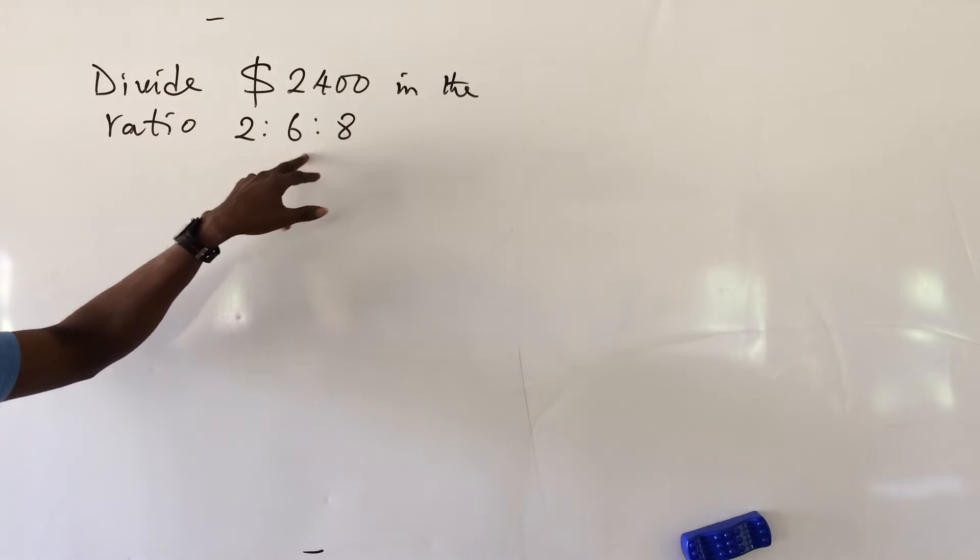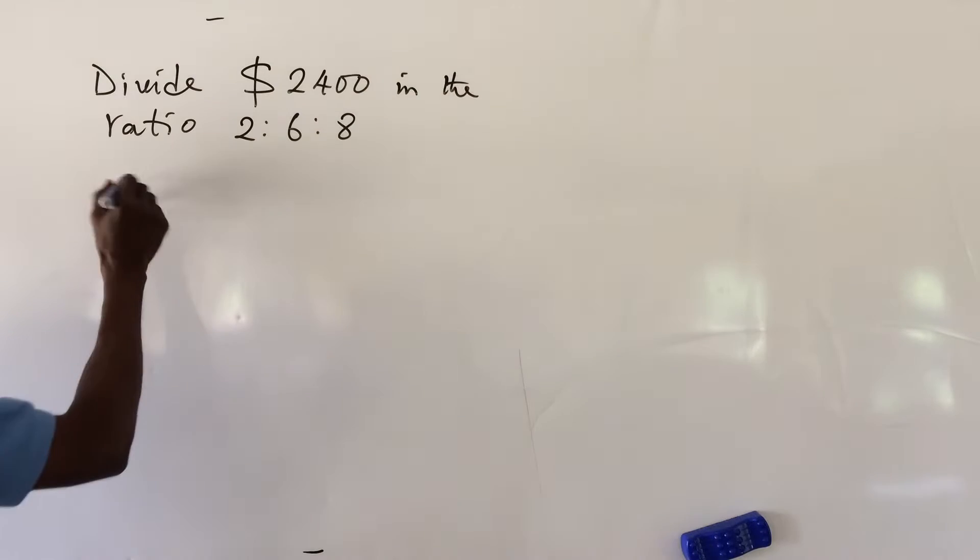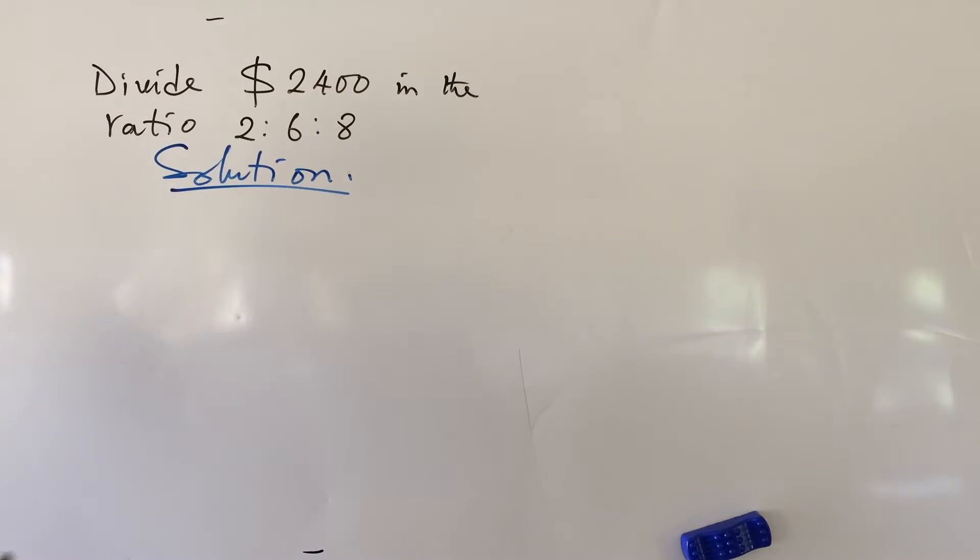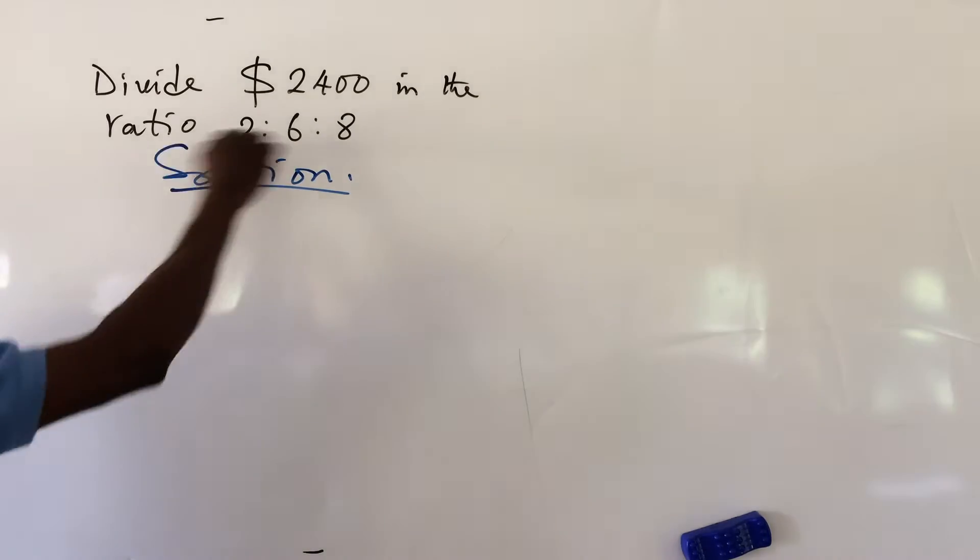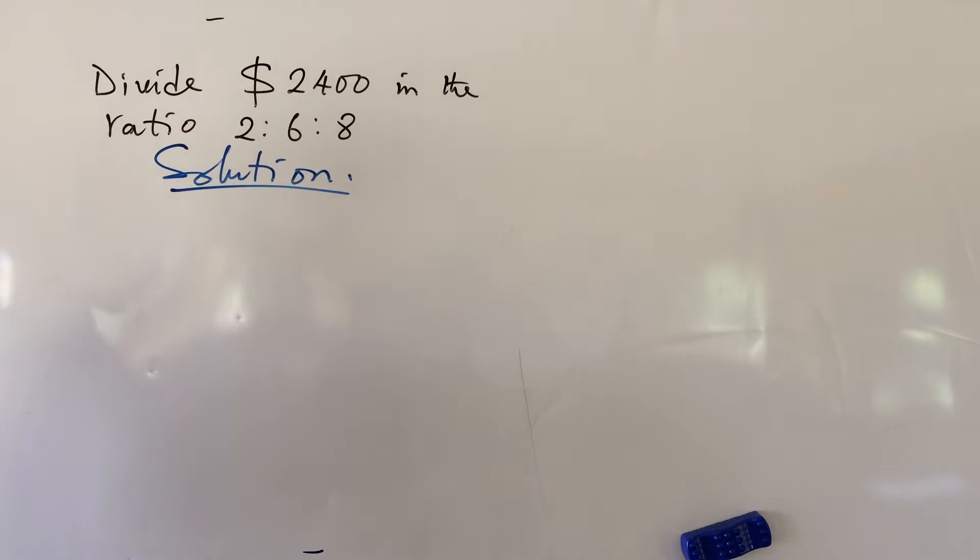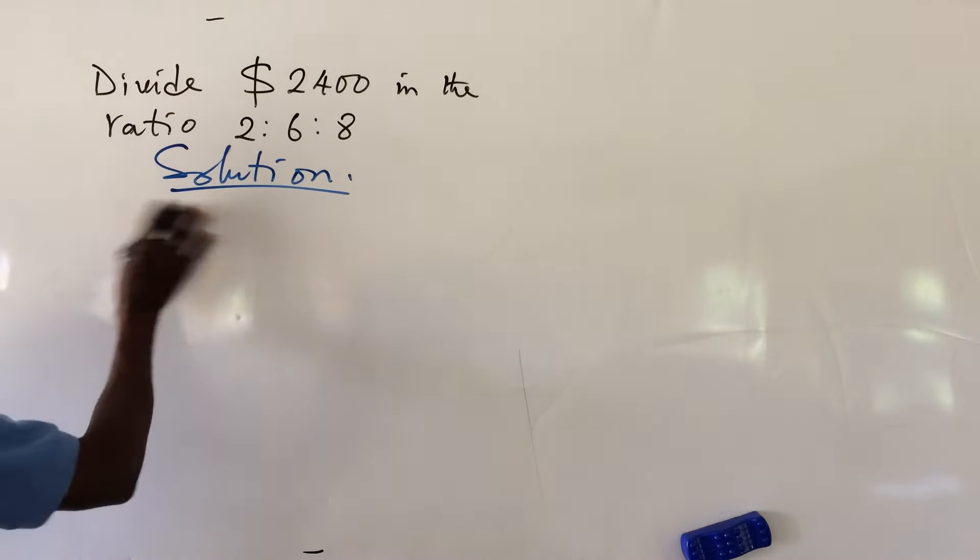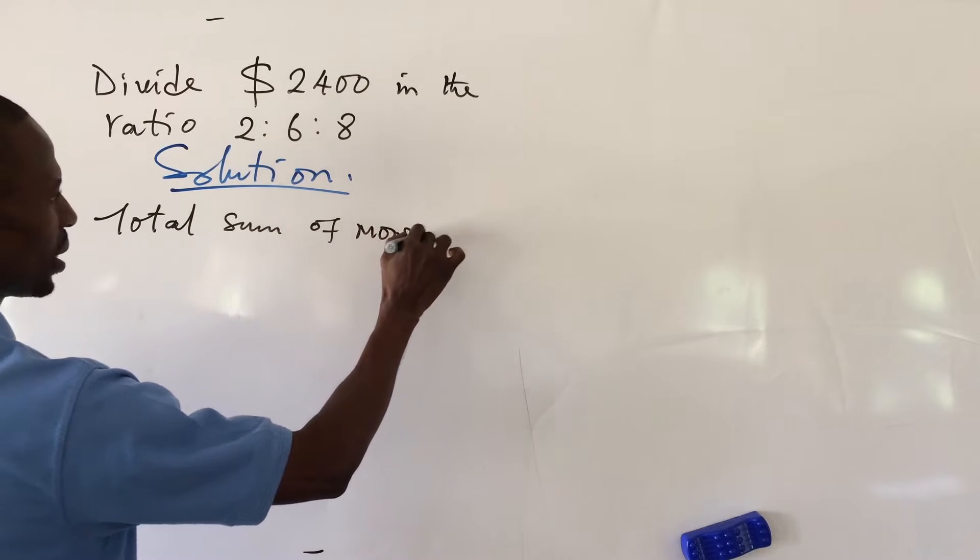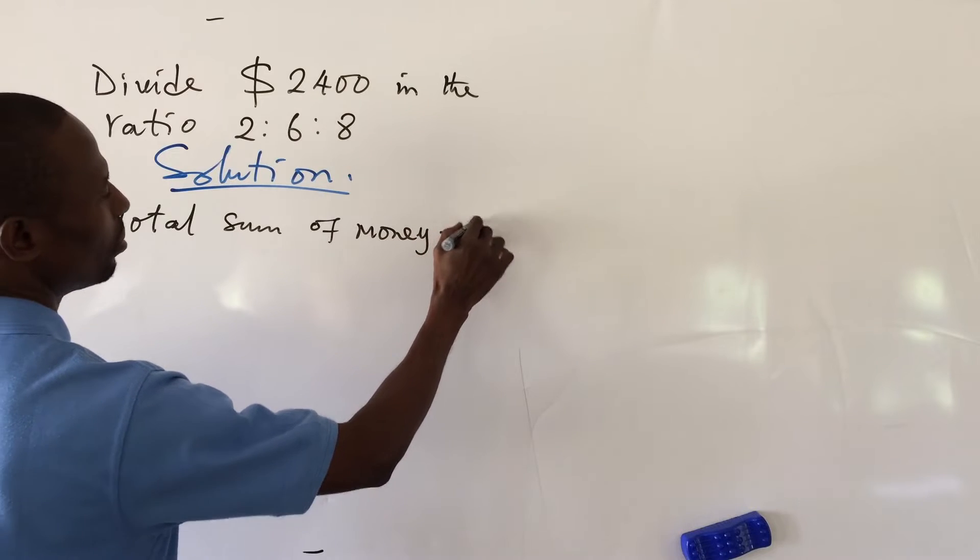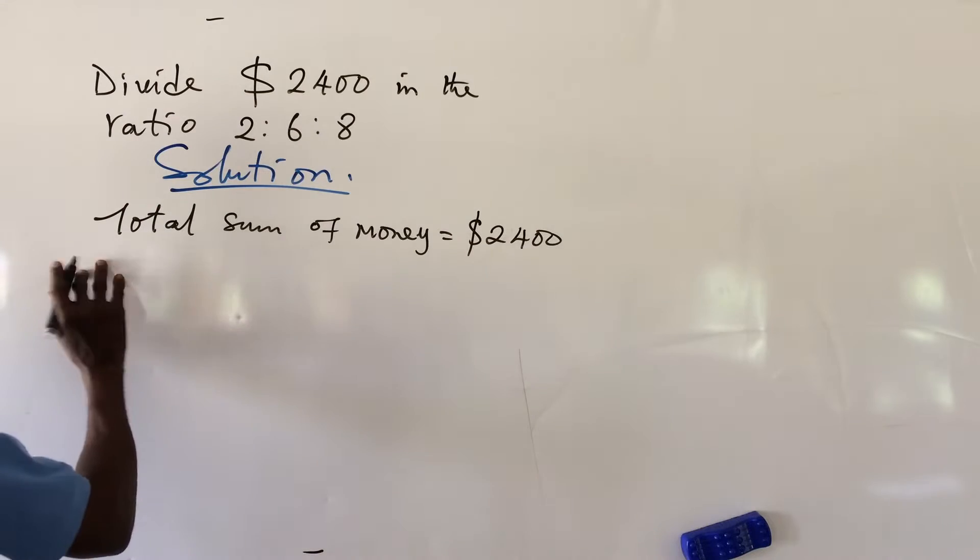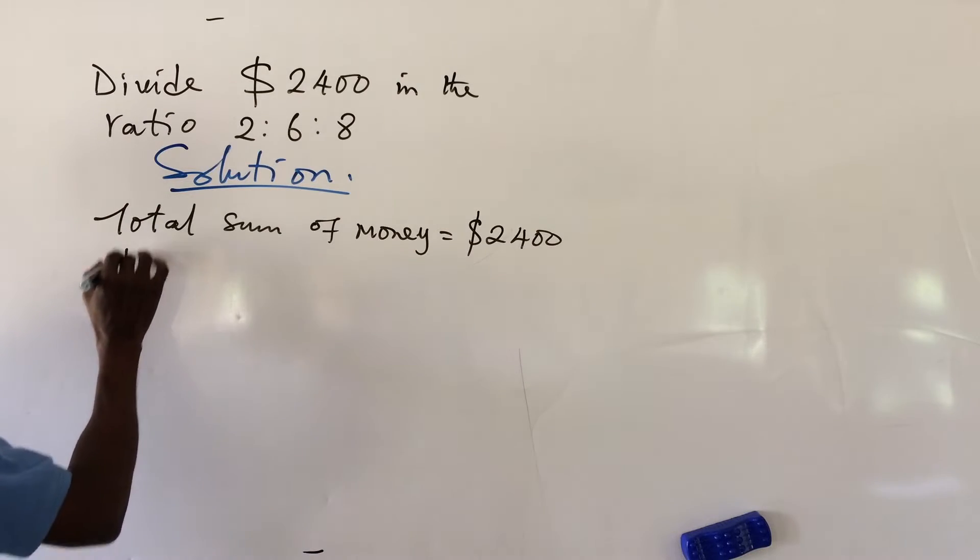Very easy. Again, we take our solution. We want to split this money into three sessions or three portions according to this ratio. So first we will take down here, we put down our sum. Total sum of money equals $2400. Then we say ratio 2:6:8.